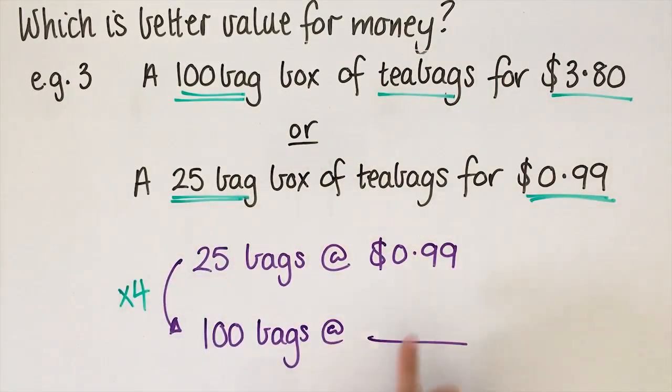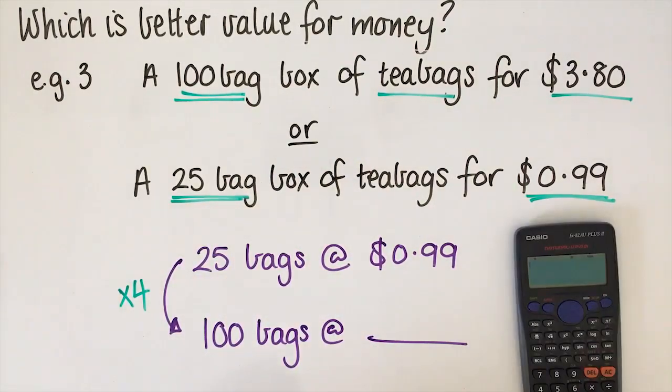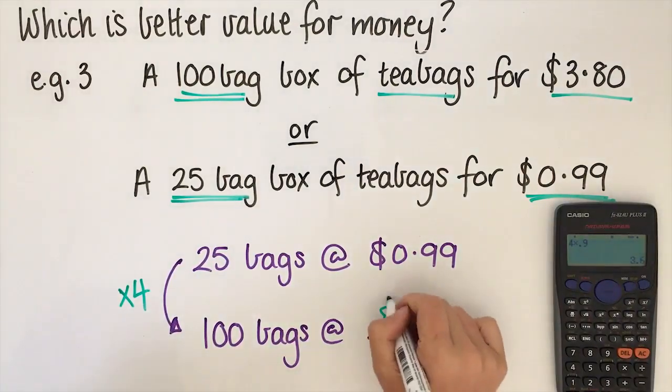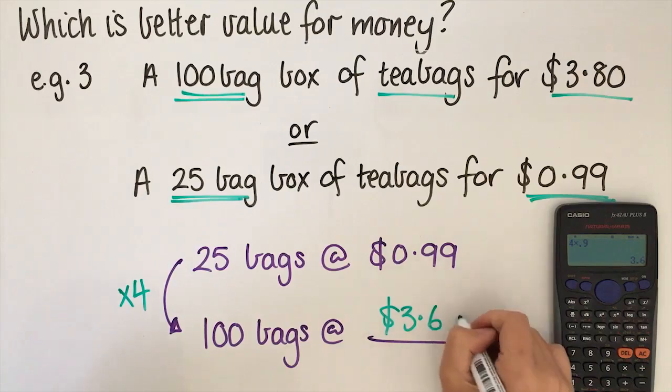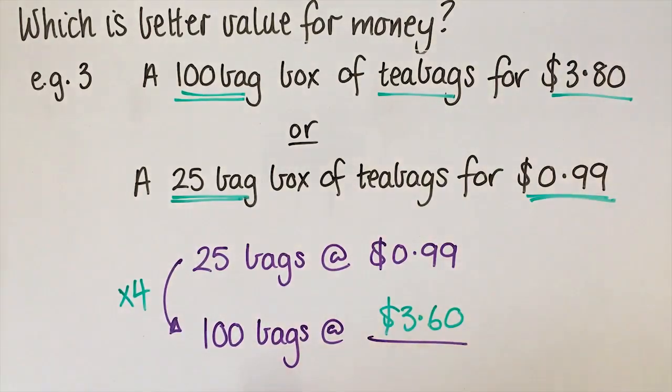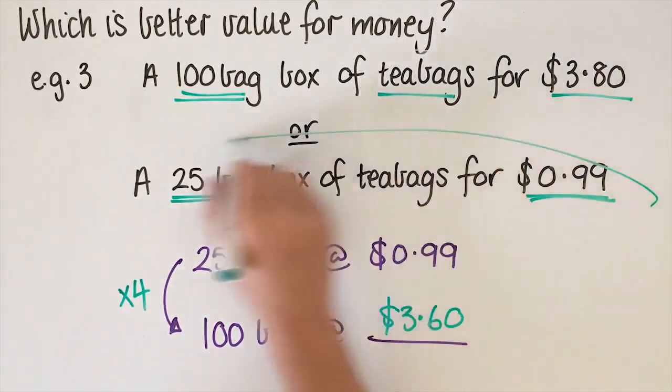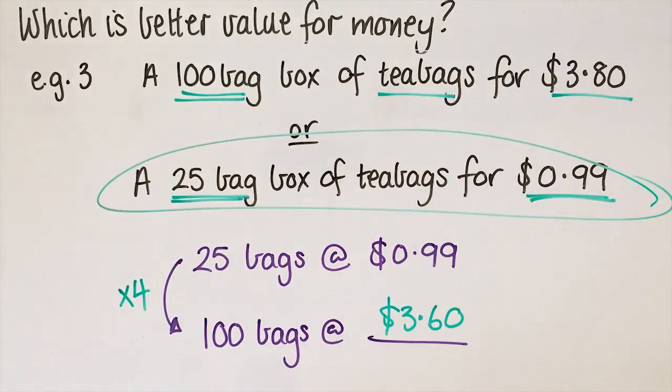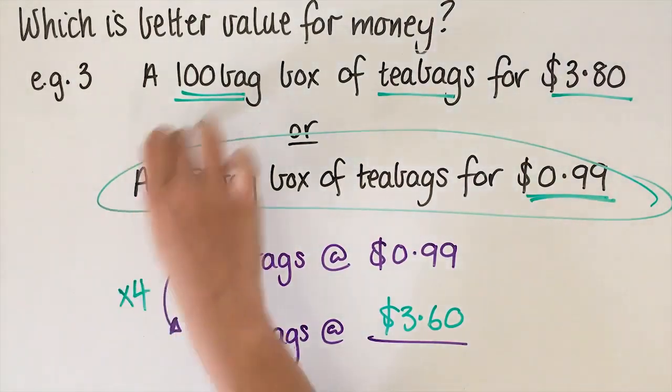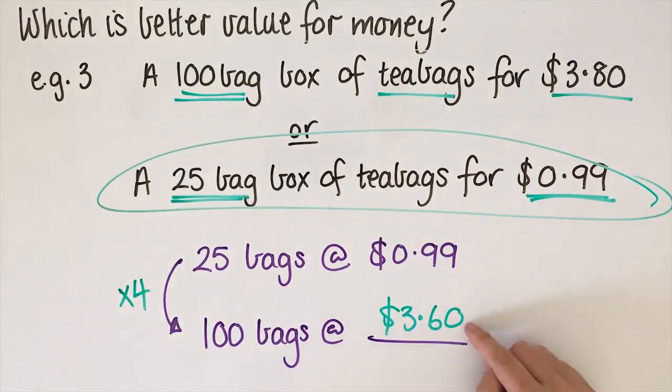So if I bought four of these, how much would that cost me? Four times 0.99 is $3.60. So in this example, this is cheaper. It's cheaper to buy four of the small boxes than one of the big boxes, because this only adds up to $3.60, whereas one big box is $3.80.